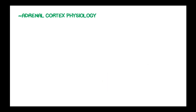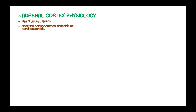The adrenal cortex is the outermost layer of the adrenal gland, and it has three distinct layers: the zona glomerulosa, the zona fasciculata, and the zona reticularis. These layers secrete adrenocorticoids, or corticosteroids.